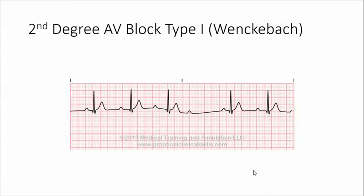In this strip, the QRS complexes are normal. For every QRS, we have a P wave — a normal P wave. That means the conduction went through normally to the ventricles.